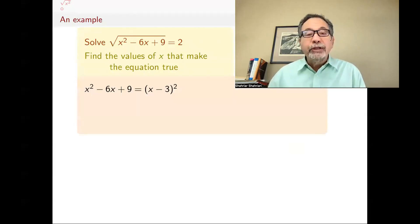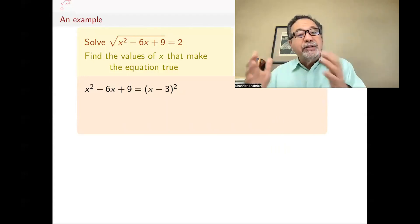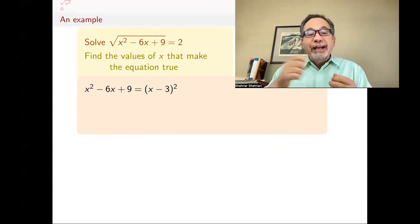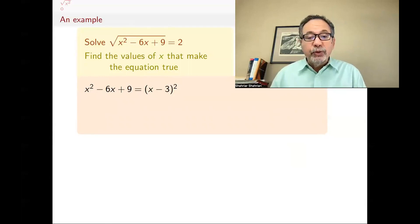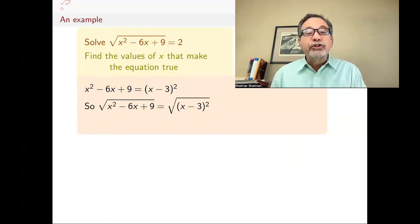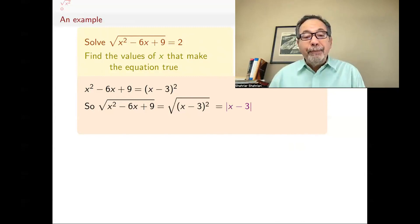There are different ways of doing this. One way: x squared minus 6x plus 9 is x minus 3 squared. If you take x minus 3 times x minus 3, you get x squared minus 6x plus 9. So to find square root of x squared minus 6x plus 9, I find square root of the quantity x minus 3 squared. By what I said, square root of apple squared is absolute value of apple, so this is absolute value of x minus 3.